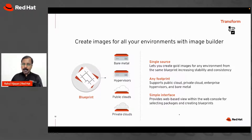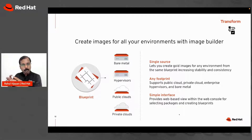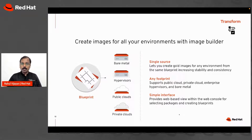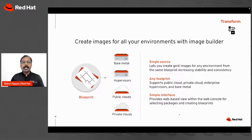Image Builder is a technology in RHEL that lets you create a blueprint — download and bring all the packages into it, create a golden image, and then with a click of a button generate images for VMware, OpenStack, or various public cloud providers. This gives you one consistent image to deploy across different environments, saving time and ensuring the same patches apply everywhere when you need to troubleshoot.